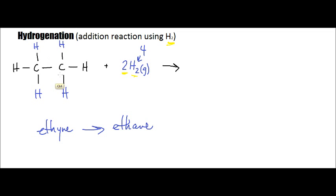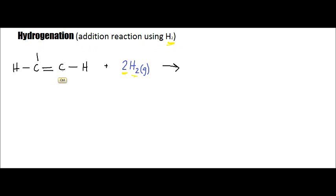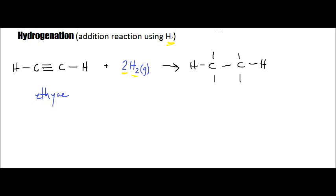So here is our ethyne molecule. These hydrogens are going to attack at the triple bond to allow us to form our ethane molecule. I'll put the hydrogens in a different color just to show you — it doesn't really matter whether you put the hydrogens on either side. Just know that we are pretty much attacking that triple bond to allow that reaction to actually take place.